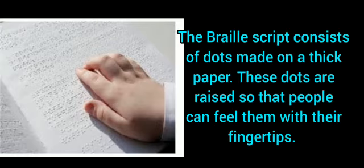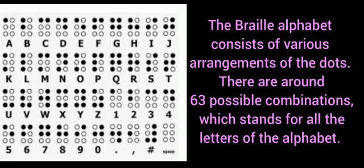The Braille script consists of dots made on a thick paper. These dots are raised so that people can feel them with their fingertips. The Braille alphabet consists of various arrangements of the dots. There are around 63 possible combinations, which stand for all the letters of the alphabet.